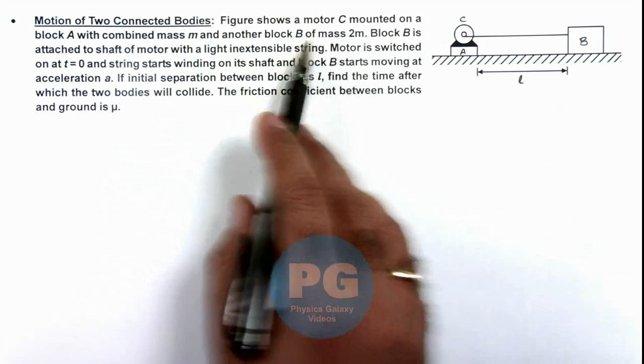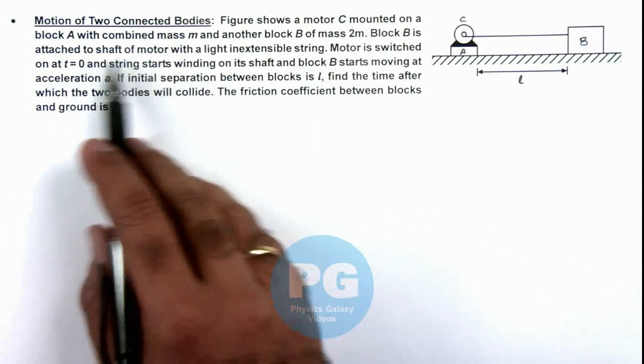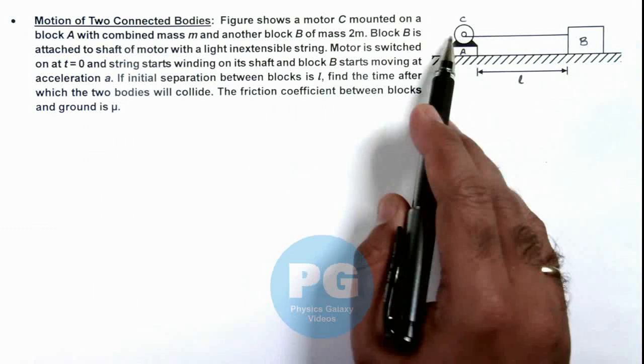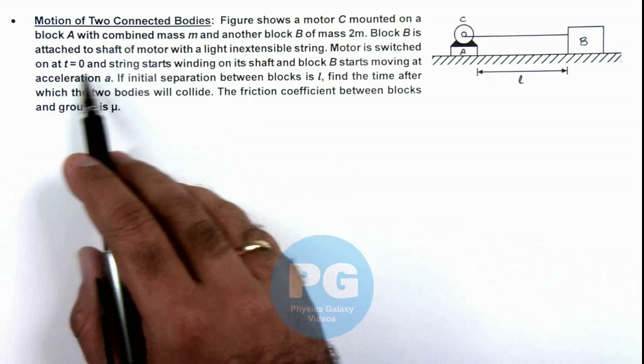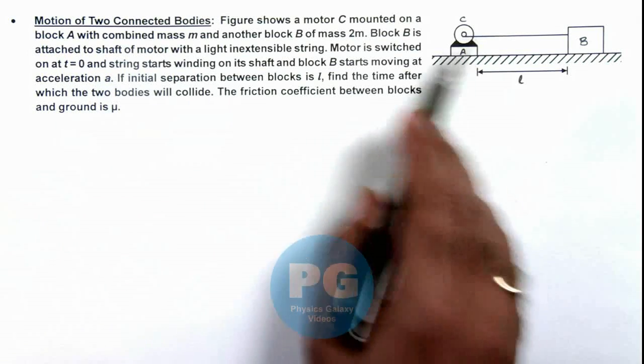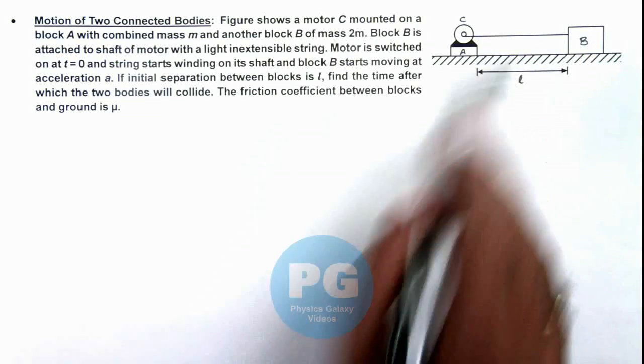And another block B which is of mass 2m. Here block B is attached to the shaft of motor with a light inextensible string. Now the motor is switched on at t equals zero and string starts winding on its shaft, and due to which the block B starts moving with an acceleration a.